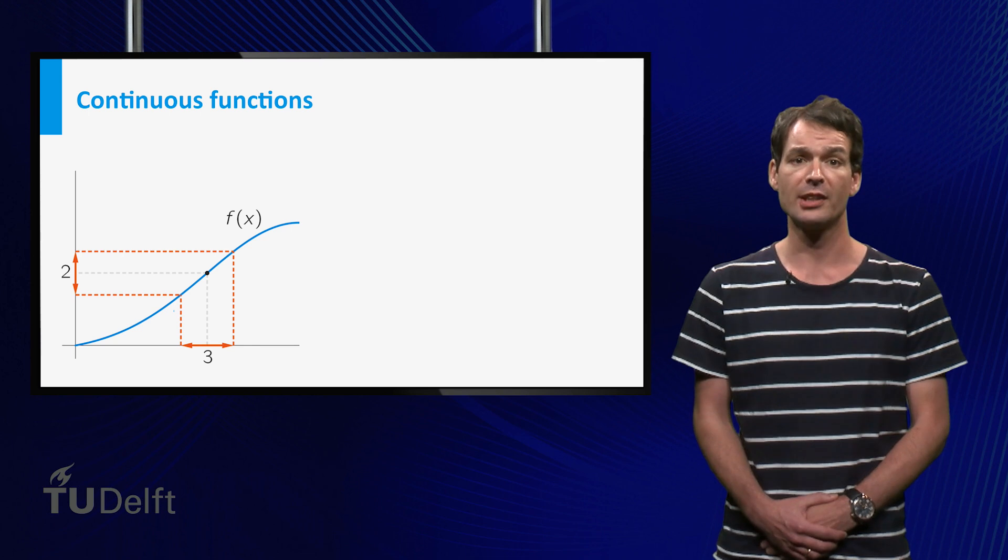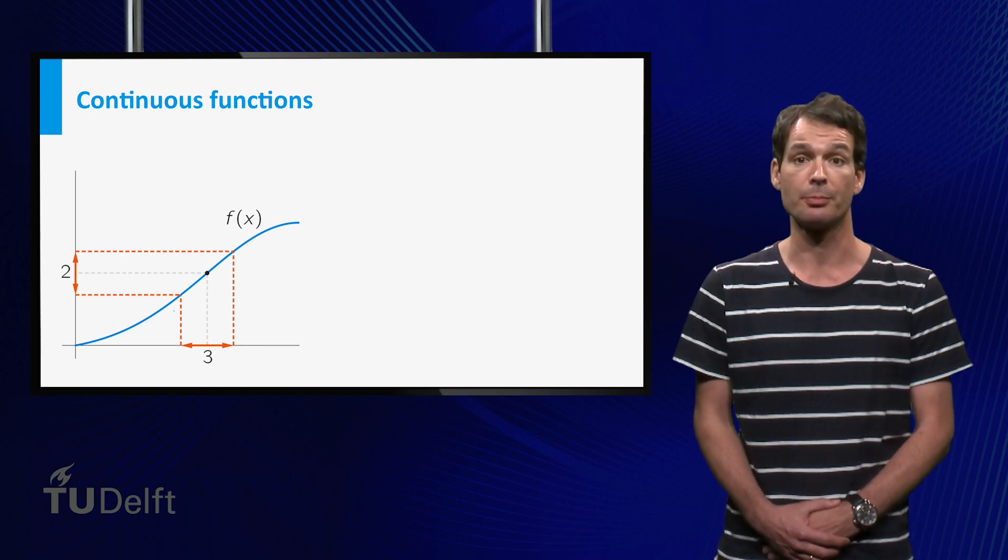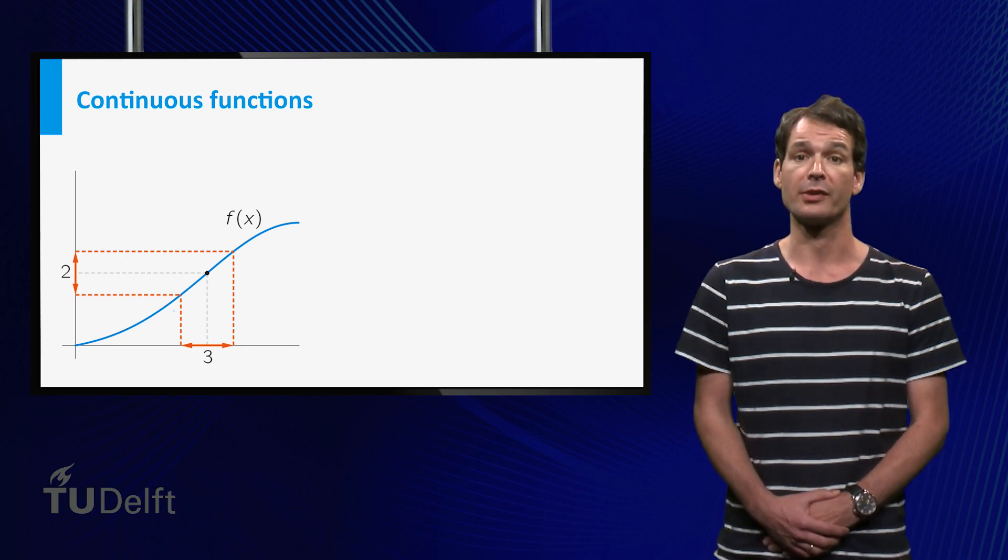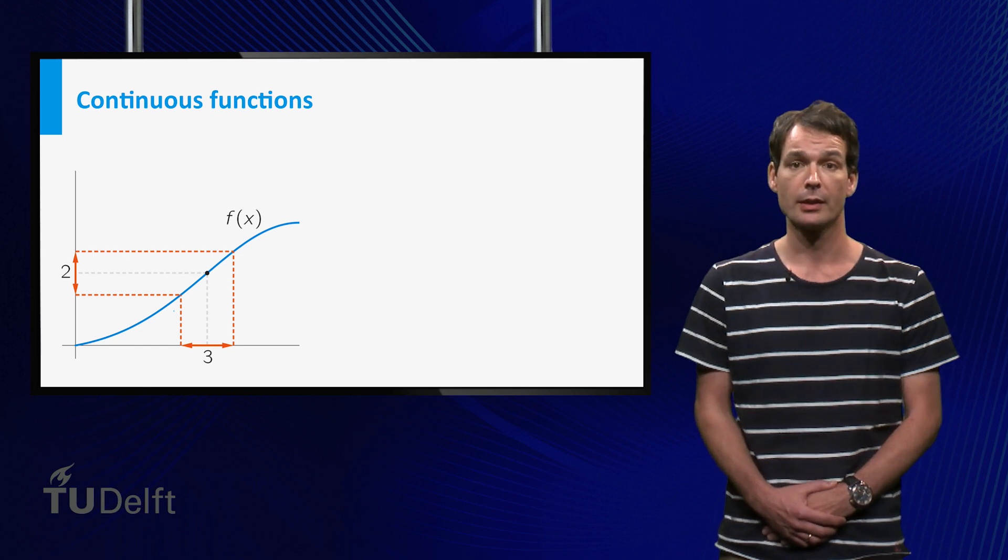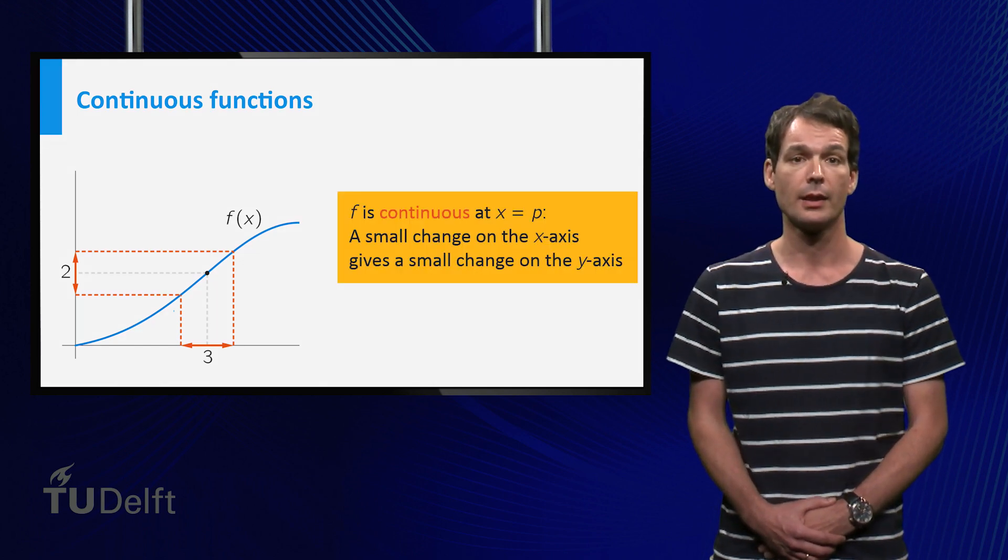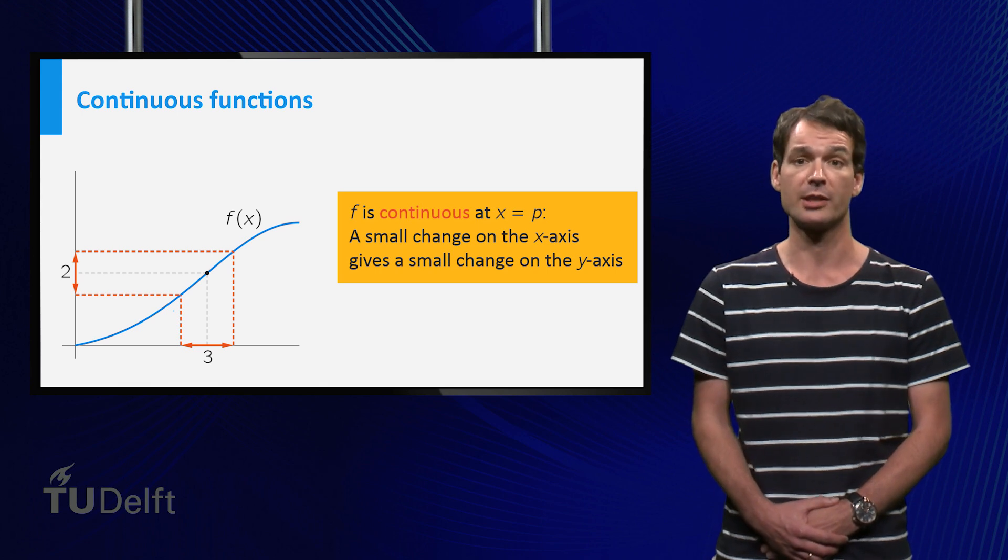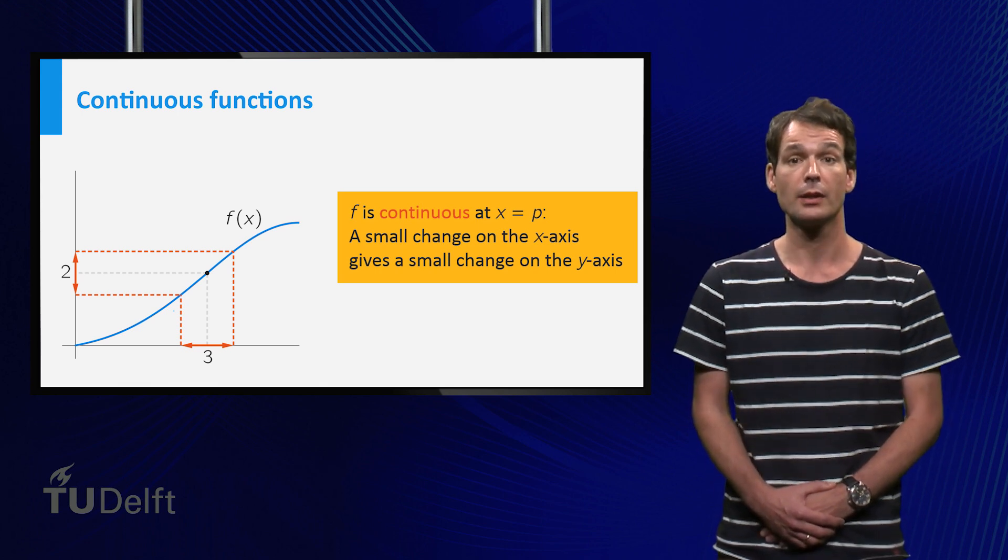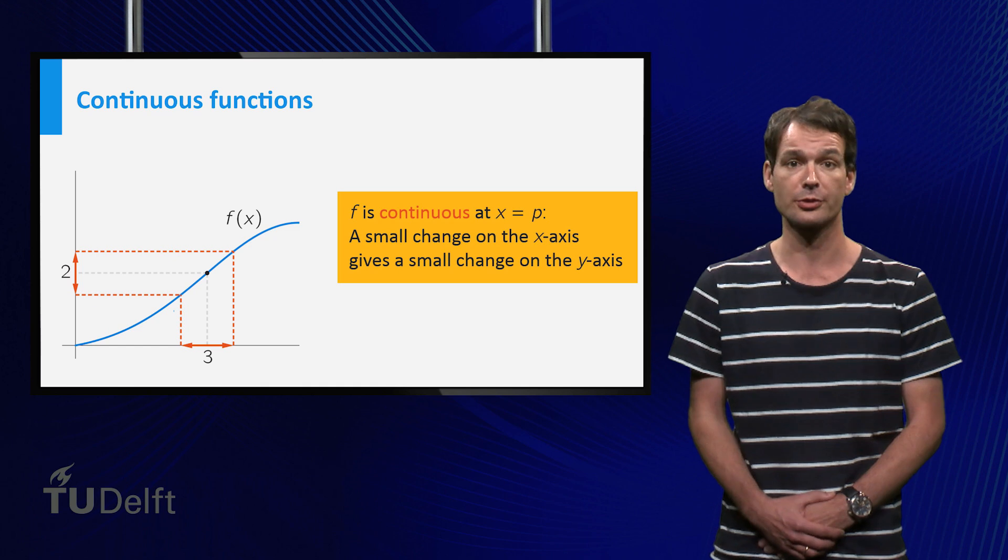The function that you see here is actually continuous at any point p, because if we take a point x which is close to p, then f will be close to f of p. In other words, a small change on the horizontal axis will only give a small change on the vertical axis.